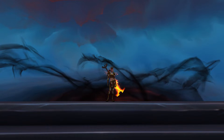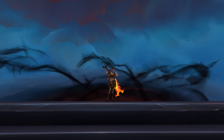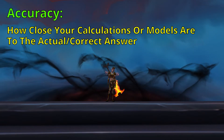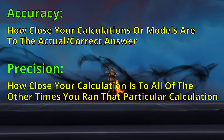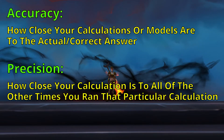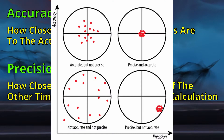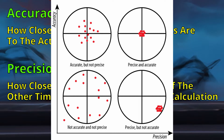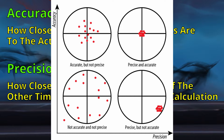Because I like to start from first principles, I want to begin by discussing accuracy and precision. Accuracy is how close your calculations or models are to the actual answer. And precision is how close your calculation is to all of the other times that you've done that particular calculation. Obviously, the best case scenario is to be both accurate and precise. But when attempting to model complex systems such as combat in WoW, that's not usually possible. Instead, it's necessary to decide which is more important to you and to try and optimize for that. Regardless of whether you choose to optimize for accuracy or precision, there are flaws associated with that choice.